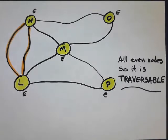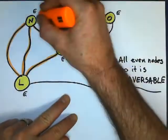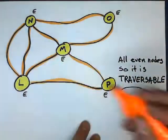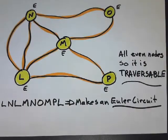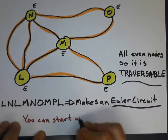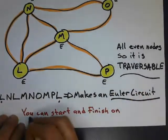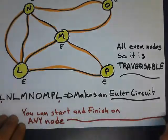So where do I start here? Here's my circuit, and I'll go over to N, over to O, back to M, over to P, and finish at L. And you can see, when I write the circuit, I start and finish on L. And I can start and finish on any node. And I will get a circuit.